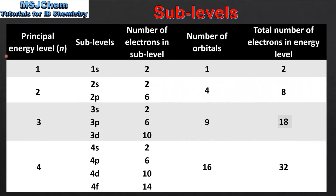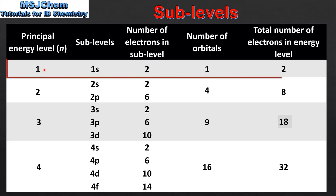Let's end the video with a summary. In this table we have the principal energy level with the number of sublevels, the number of electrons in each sublevel, the number of orbitals, and the total number of electrons in each main energy level. Starting with n=1, which has a 1s sublevel that can hold a maximum of 2 electrons — so the n=1 energy level has 1 orbital which can hold 2 electrons.